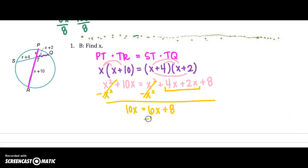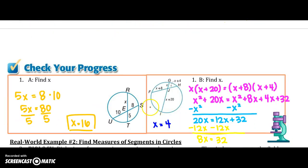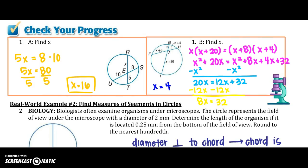So I get 10X equals 4X plus 2X would be 6X plus 8. Subtract that 6X from both sides. I get 4X is equal to 8, so X is going to equal 2. Alright, go ahead and stop this video and try your next two checkpoints on the back page. Here are your answers.